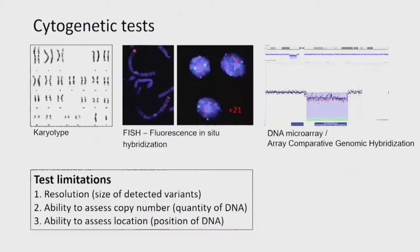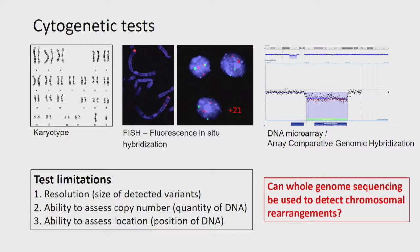The cytogenetic tests we currently use in the clinic — karyotyping, FISH, and microarrays — obviously have limitations. They have limitations in resolution, limitations in the ability to assess copy number, and an inability to assess the location of different DNA segments. And what we've been asking for a couple of years now is: can whole genome sequencing be used to detect chromosomal rearrangements as a clinical first-tier test?